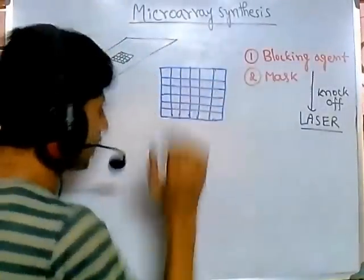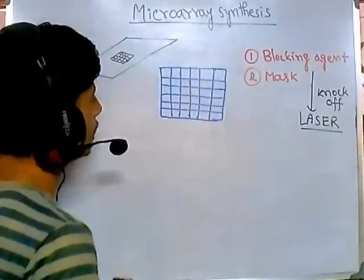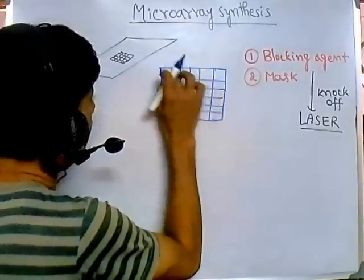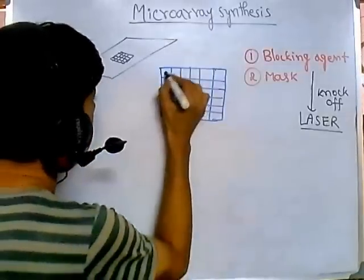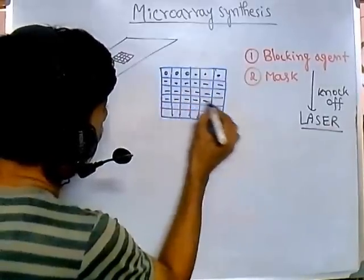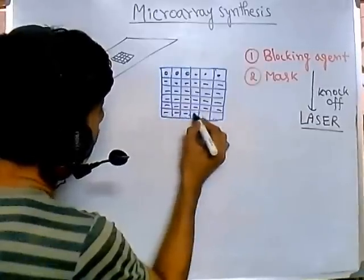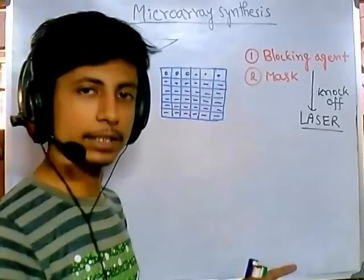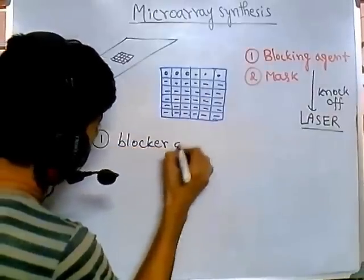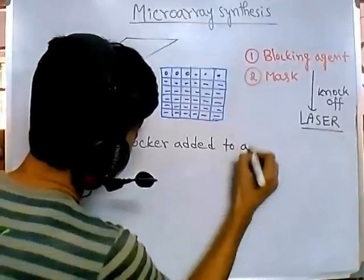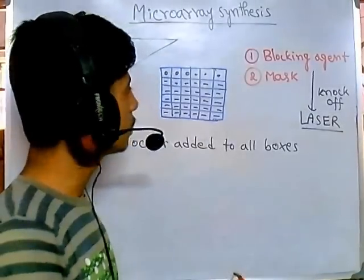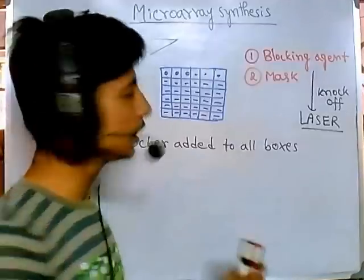Now let's begin the process. In the very first step, blocker is added to every single box, ensuring no nucleotide can bind with any region. That's the first step — blocker added to all boxes. Once that is done, the second thing we do is add a mask.